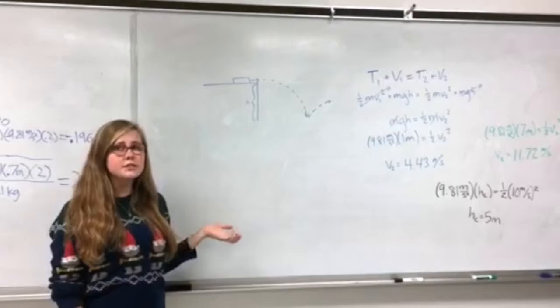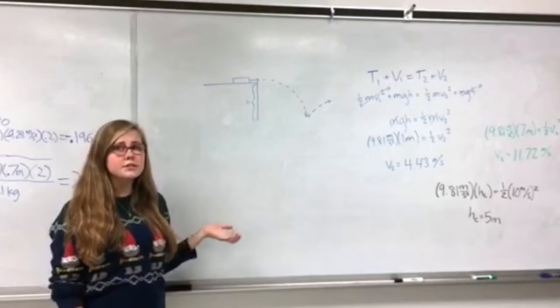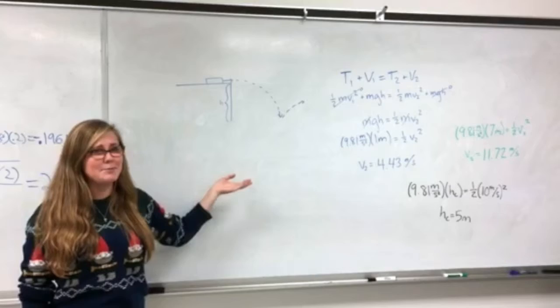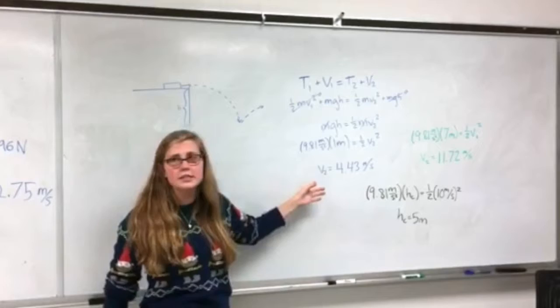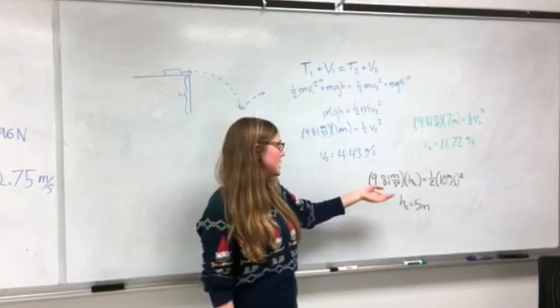For the second part of our experiment, we wanted to look at how high you could drop your phone for it to break. After rigorous testing with various different heights, we tested dropping the phone at 1 meter and 7 meters, and found the different velocities that impacted the ground. We found that when your phone impacts the ground at 10 meters per second, it will break. So the critical height that you can drop your phone from is 5 meters.